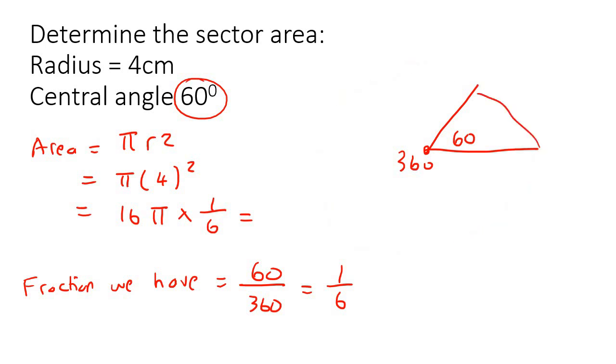And so if you had to go work this out, it's going to give us eight over three pi. If you would like decimals, it's about 8.38 centimeters squared. Squared because it's area.